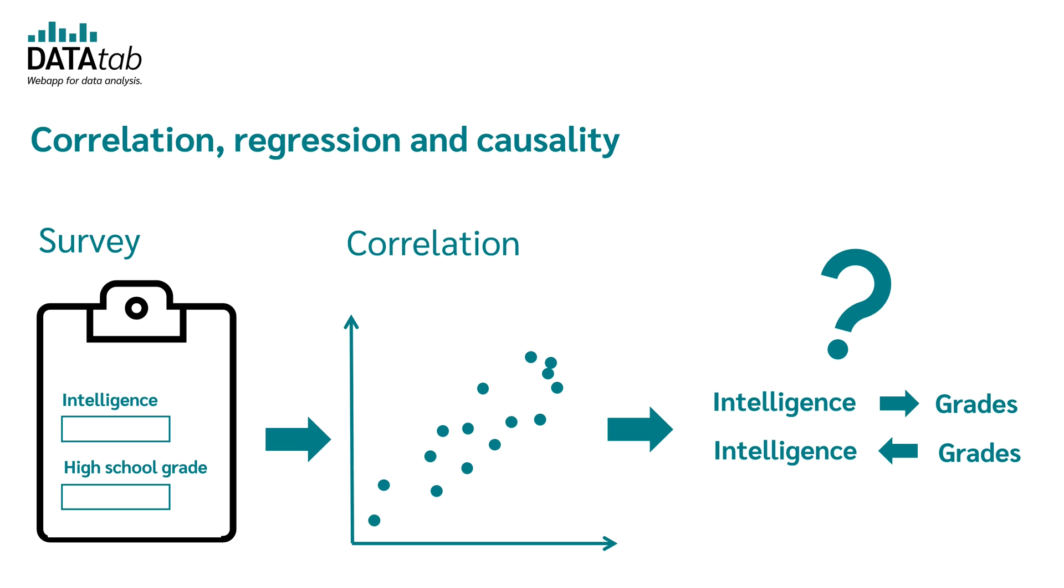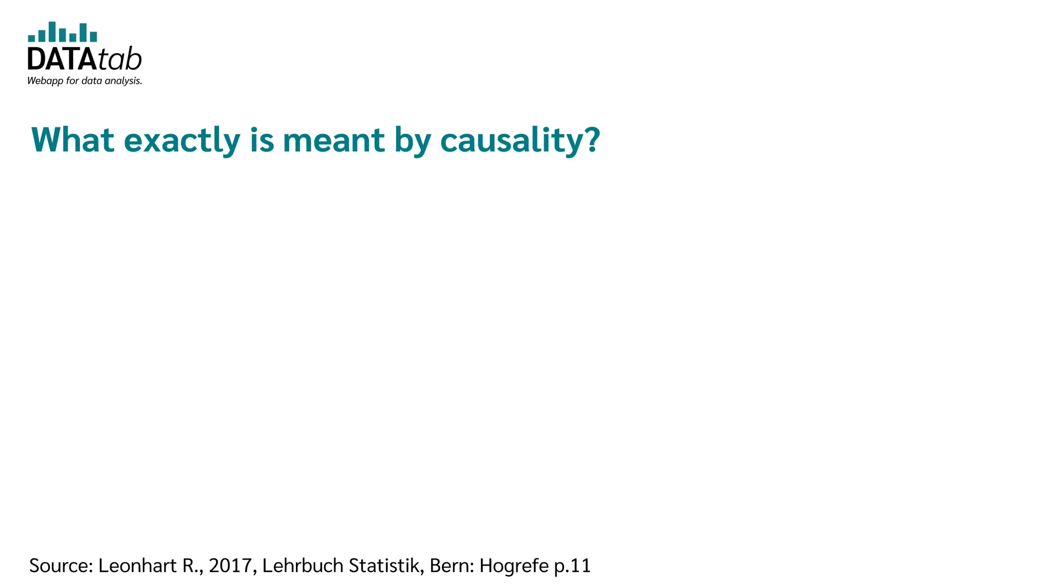I think now we can look at what causality means and under which conditions one can speak of causality. Causality means that there is a clear cause-effect relationship between two variables. A common mistake in the interpretation of statistics is that when a correlation exists, it is immediately assumed to be a causal relationship.